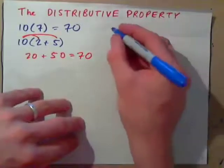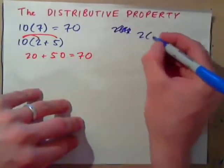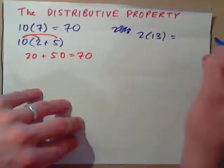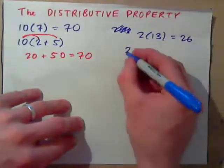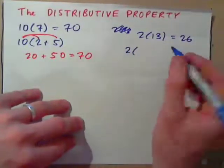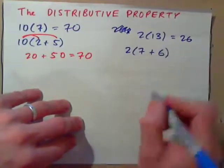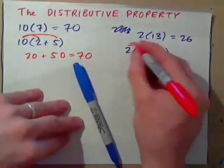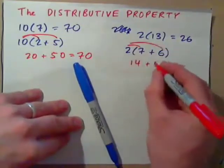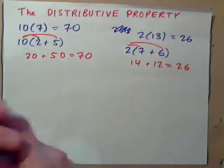So, for example, what's 2 times 13? Write down the answer. It's definitely 26, isn't it? Well, the distributive property would look like this. 13 is the same as 7 plus 6. So, we could go 2 times 7, 14. 2 times 6, 12. 14 plus 12, 26. Right?